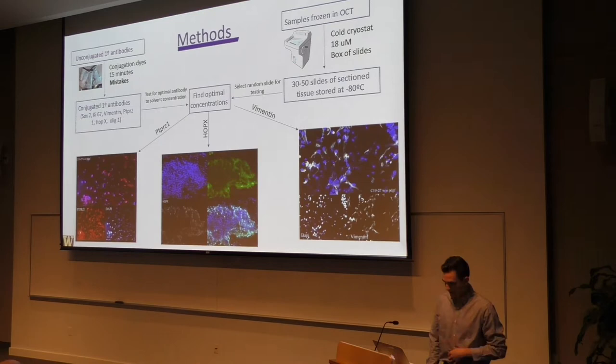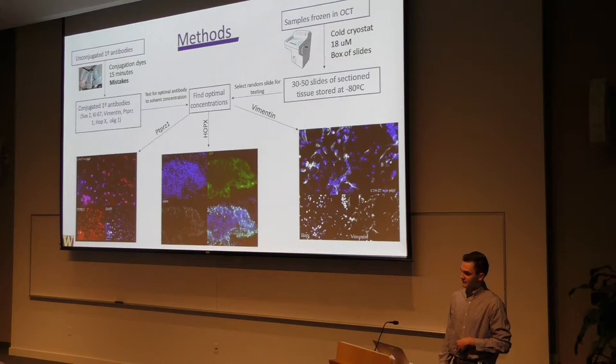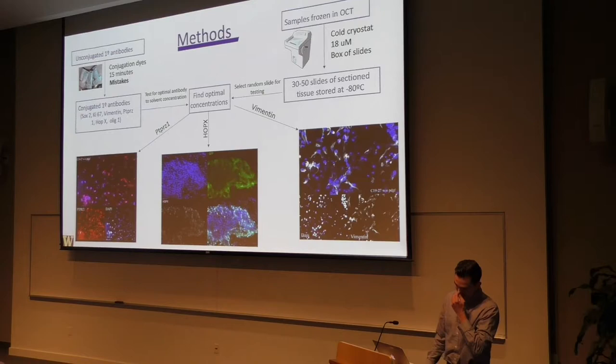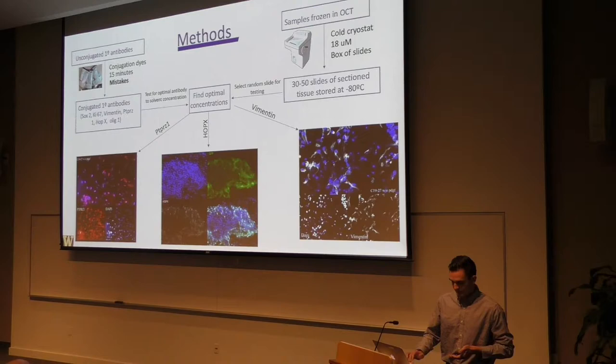On the other side, I had to take these samples that were frozen in OCT, section them — sitting in a cold cryostat at negative 18 degrees with your hands in there — for three to four hours, turning a wheel and continuing to section the tissue. After that, I would take one of these slides randomly, take one of my primary conjugated antibodies, and test the concentration of the antibody so we weren't using too much and wasting it, but also not using too little to get no signal.